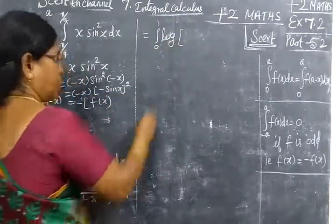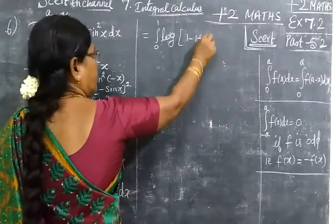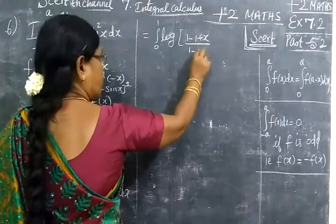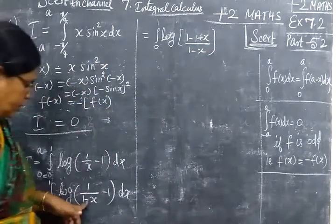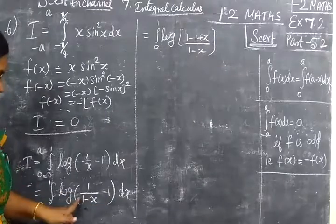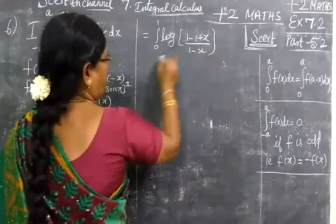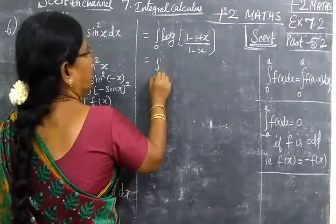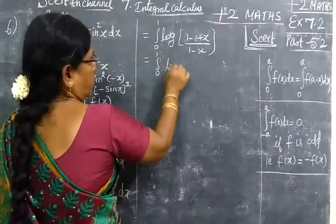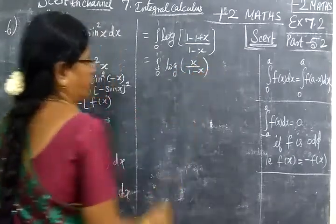Taking LCM and cross multiply. So 1 minus 1 plus x by 1 minus x. Cross multiply, you get minus of something. So minus 1 and minus minus plus. So 1 minus 1 cancel. So integral 0 to 1 log of x by (1 minus x).